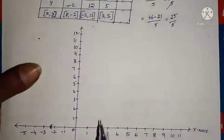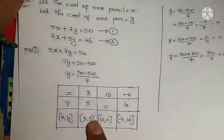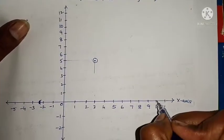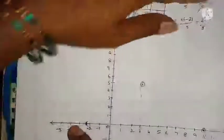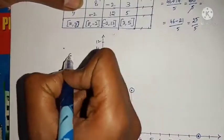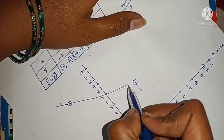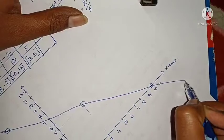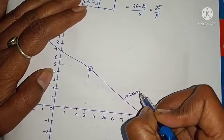Now let us plot these points on the graph. For equation 1 — plotting (3,5), (10,0), and (minus 4, 10). Join these 3 points to get a straight line. This is equation 1: 5x plus 7y equals 50.